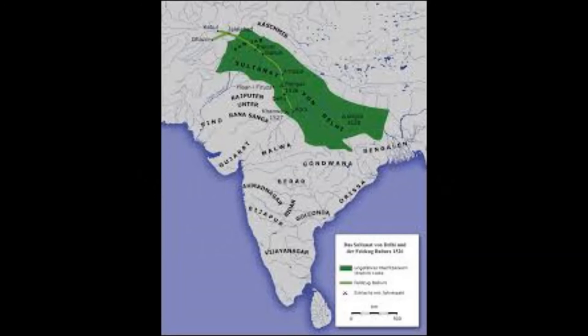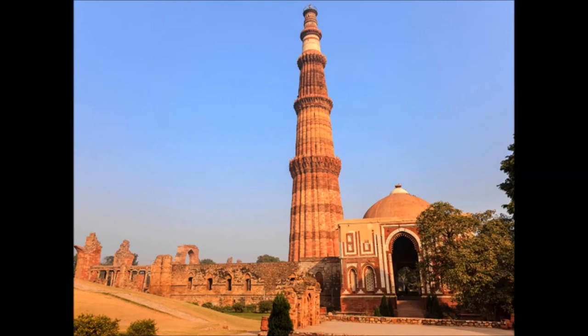There were other Mamluk empires, such as the Mamluk dynasty which founded the Sultanate of Delhi in India. This was founded by Qutb ad-Din Aybak, who was a freed slave of Turkic origin. Nowadays one of the things he is perhaps most famous for is the construction of the Qutb Minar in Delhi.